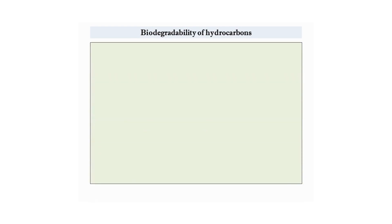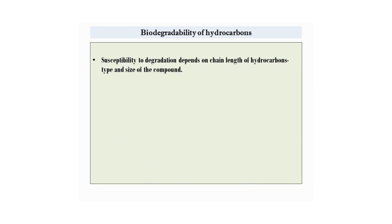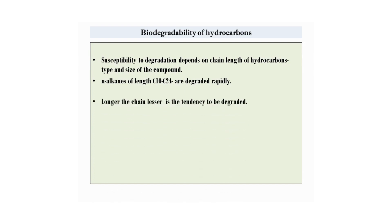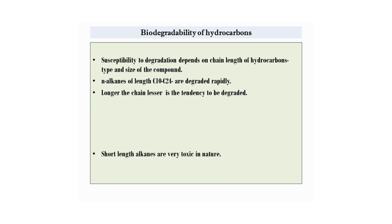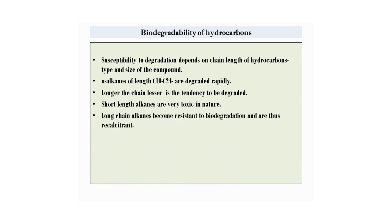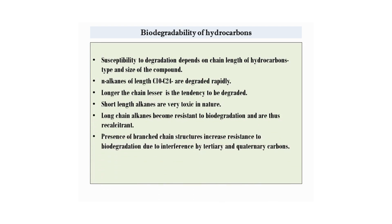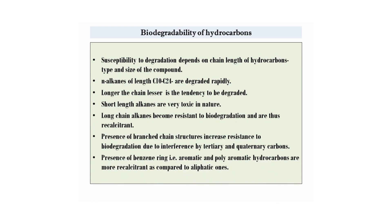What are the factors that determine the biodegradability of hydrocarbons? The susceptibility to degradation depends on the chain length, type, and size of the hydrocarbon. In alkanes, chain lengths of 10 to 24 carbons are degraded rapidly. Longer chains are less easily degraded, while short-chain alkanes are very toxic in nature. Long-chain alkanes are resistant to biodegradation and thus recalcitrant. Branched-chain structures increase resistance due to interference by tertiary and quaternary carbon atoms, and aromatic and polyaromatic hydrocarbons are more recalcitrant compared to aliphatic ones.